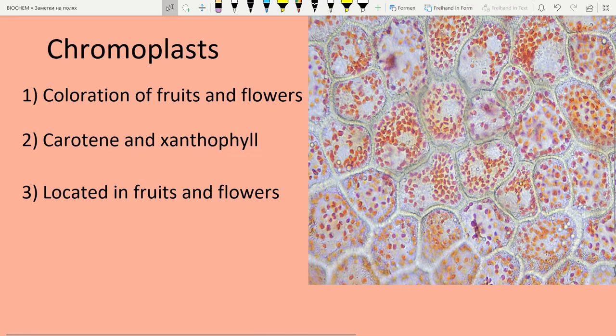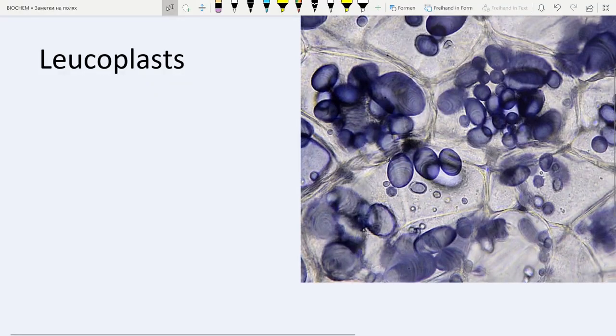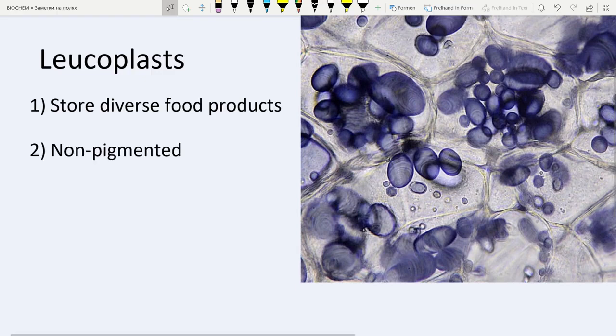And now the last type of plastids: leucoplasts. They basically just store starch, lipids, or proteins and other stuff. They are not pigmented, it means that they are also colorless.